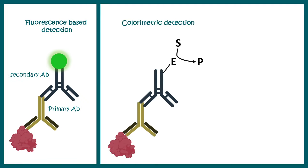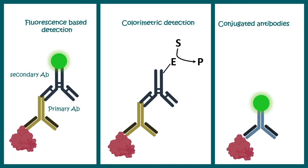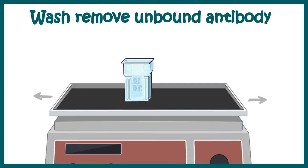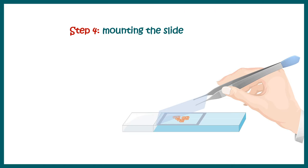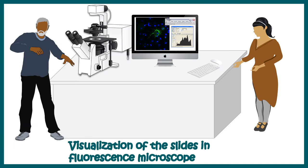Fluorescence-based detection is only one type of detection where fluorophore-conjugated antibodies are used. There could be colorimetric detection as well, where enzyme-linked antibodies are used, and in clinical settings conjugated antibodies are really useful. After secondary antibody incubation, washing is done to remove all unnecessary signals or tissue debris. Ultimately, the slides are mounted with a cover slip and are ready to be examined under a fluorescence microscope.